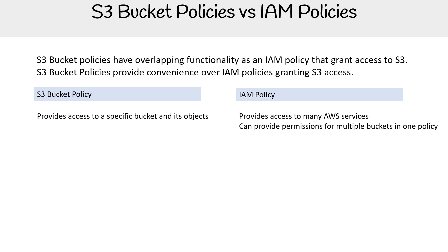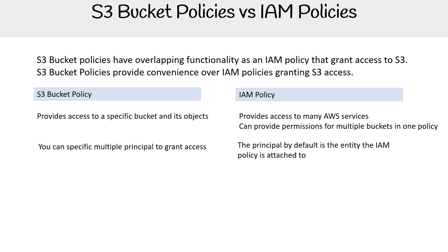If you're working with a single bucket, a bucket policy makes more sense. You can specify multiple principals to grant access — think users, AWS accounts, things like that. Whereas with an IAM policy, you always attach it to something, so it defaults to one specific identity. If you want to specify multiple principals for a specific bucket, then a bucket policy is going to be better.